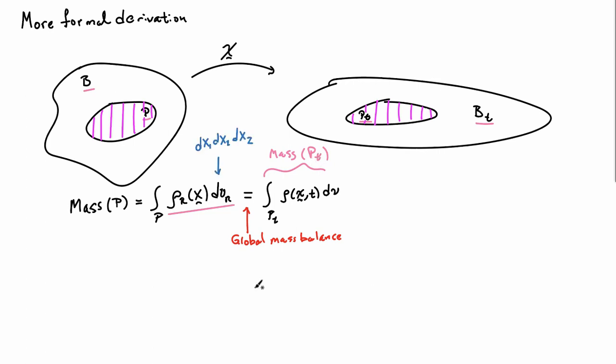Let me be a little bit more precise about what I mean by these integration volumes. So, dVR is d capital X1, d capital X2, d capital X3. And the integration volume little dV is d little x1, d little x2, d little x3. So, I'm just integrating with respect to two different coordinates over the same bit of material here.